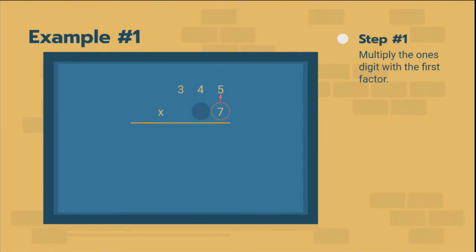So, step one, we're going to multiply the ones digit, the seven, with the first factor. So we're going to multiply seven times 345, and we're going to do it little by little.